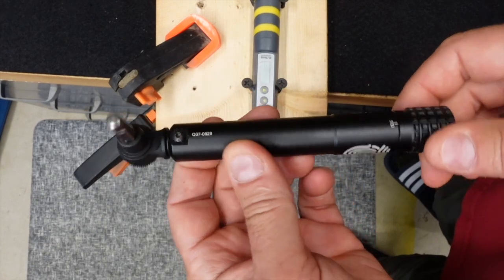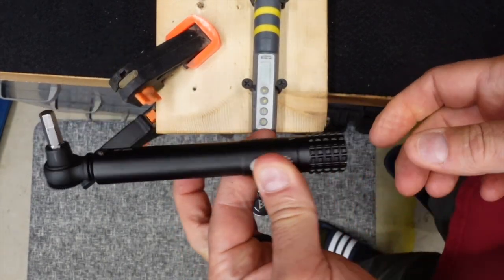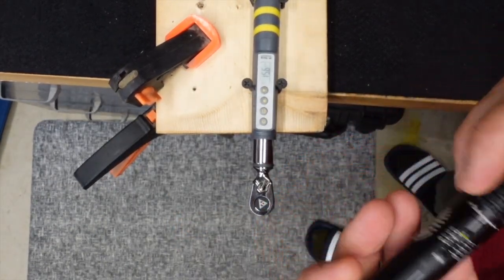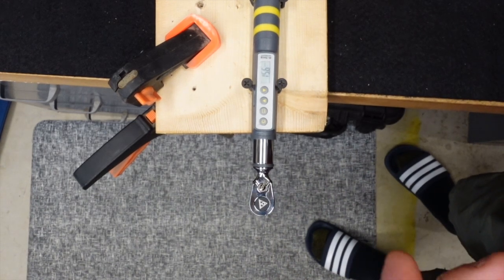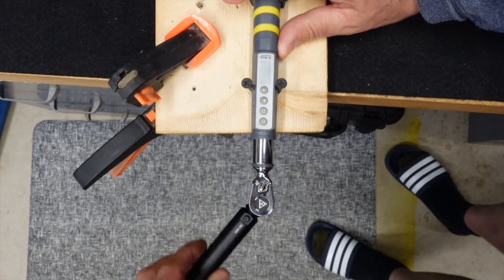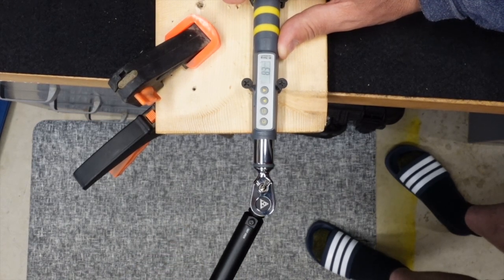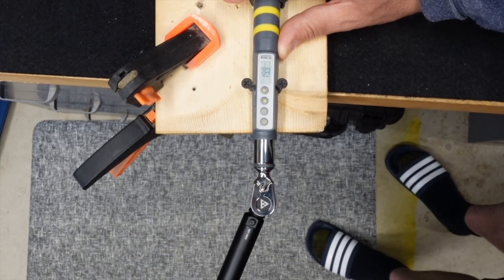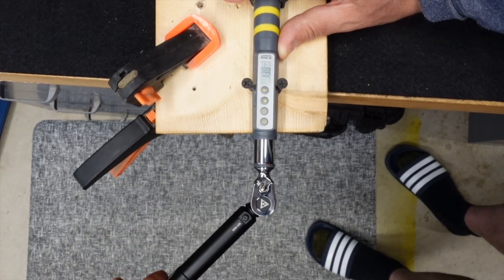All right, what do we got next? Let's go for the Topeak torque stick. There is the Topeak torque stick. I'm going to attempt it using the finger grips that it has. I am set to two newton meters, which should be right about 17.7. So if I pull...